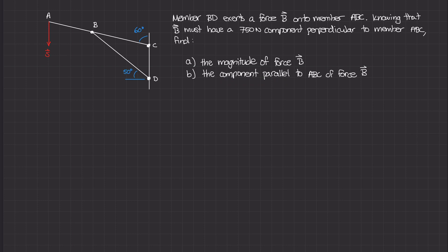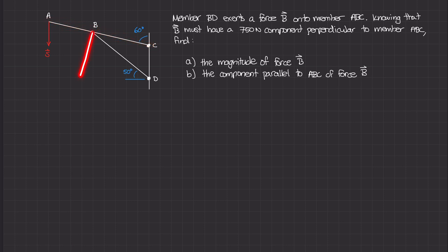Let's break down these directions, because this is a little different from the standard vertical and horizontal coordinate systems. We know that force B has a 750 Newton component perpendicular to member ABC. Here is member ABC, and that 750 Newton force component is going to be perpendicular to that member — in other words, it makes a 90 degree angle with member ABC.